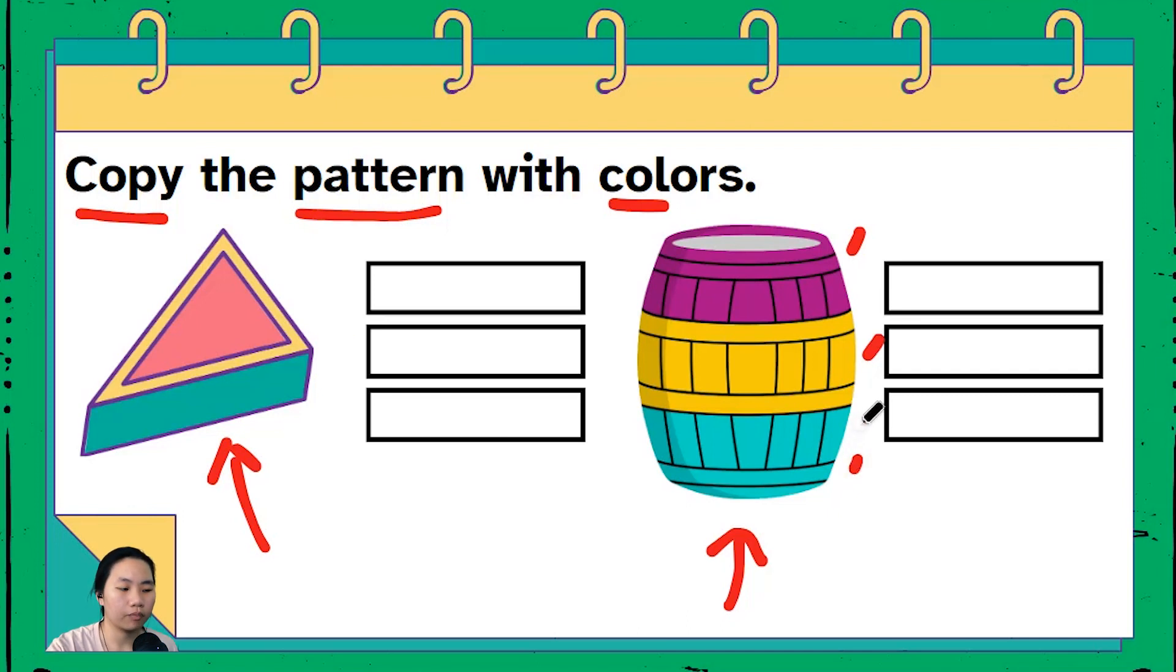That's a pattern of purple, yellow, and green. What we're gonna do is we're gonna copy the color pattern on these squares right here. So let me delete these so it looks cleaner.